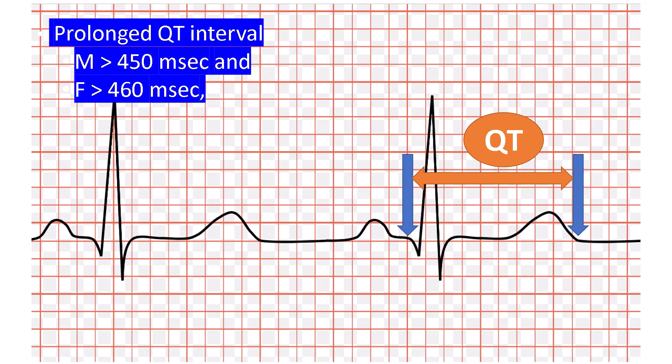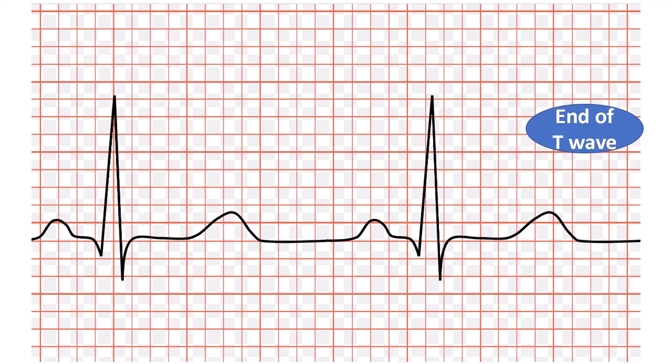How do we measure QT? From the beginning of the QRS to the end of the T wave. When the T wave has a long tail, we mark the end of the T wave at the intersection of a straight line along the downslope of the T wave with the baseline. Also exclude the U wave when there is a U wave.